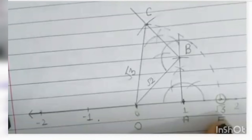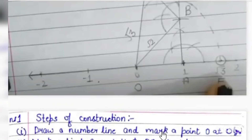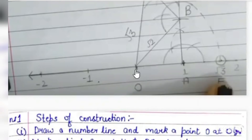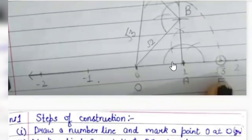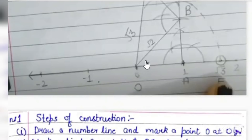First step: draw a number line and mark a point O at the origin. From origin going right: 1, 2, 3, and left: -1, -2, -3. First we take one unit length on this line, then draw a perpendicular line and take one unit length on that perpendicular. We connect this as a diagonal of the square. According to Pythagoras' theorem, if the base is one unit and height is one unit, then the hypotenuse will be √2.